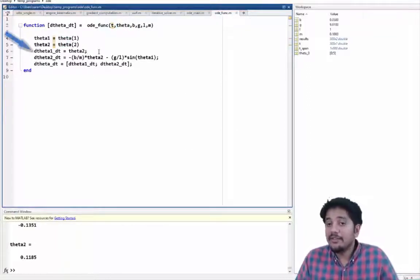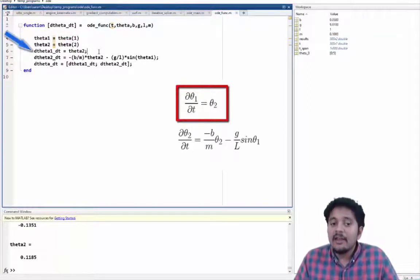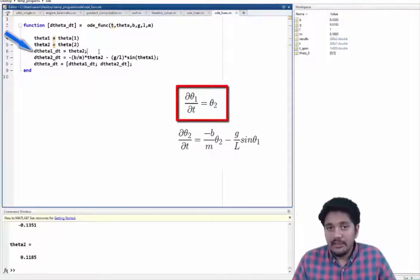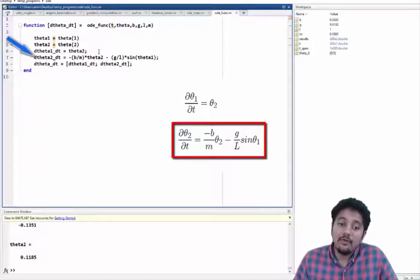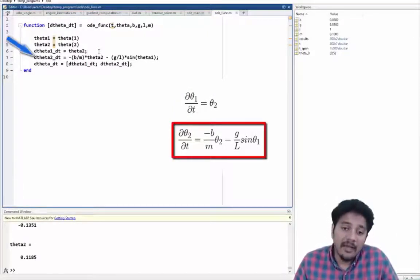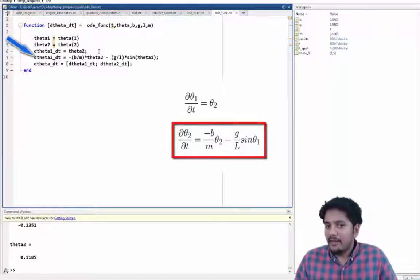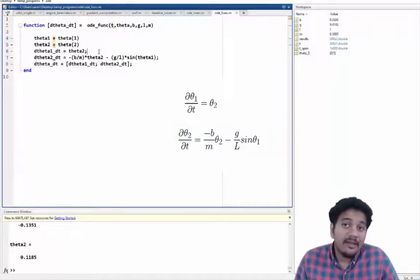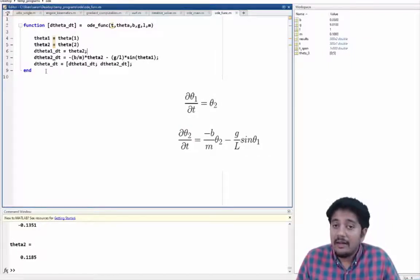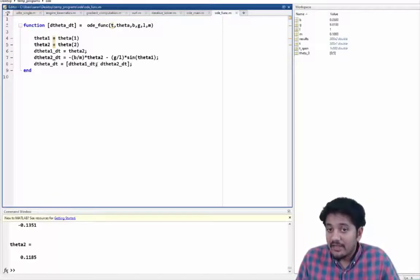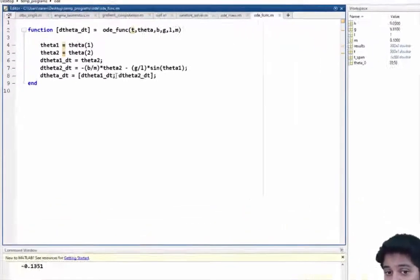And then we are defining our first ODE. So for example, line number 6 is our first ODE where we are saying d theta 1 underscore dt or which is nothing but d theta 1 by dt is theta 2. And our second ODE which is d theta 2 by dt is equal to minus b by m theta 2 minus g by l sine of theta. And then we combine this into an array called as d theta underscore dt.